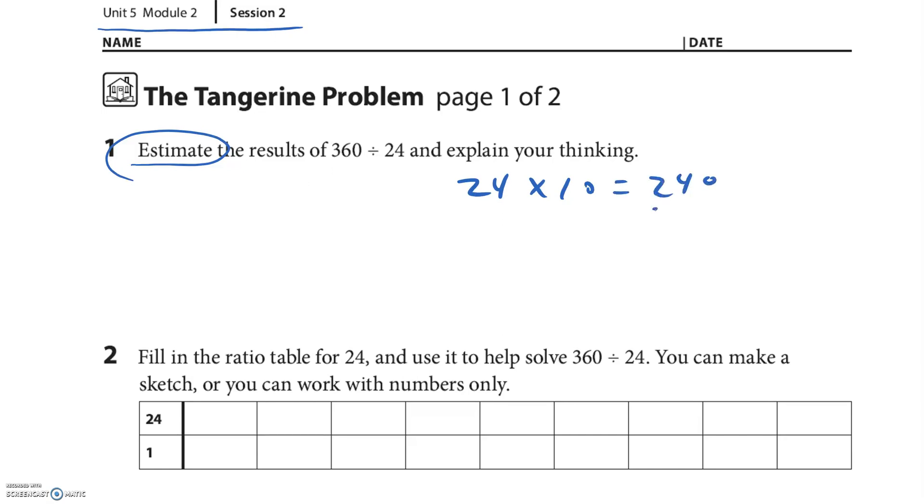And that means that if I did it again that would be 480. So it's gonna be less than 20. My answer, it's gonna be greater than 10, so I might even say it's greater than 10. Maybe 15. I'm gonna say about 15. I'm not gonna answer it, I'm just gonna say about 15.